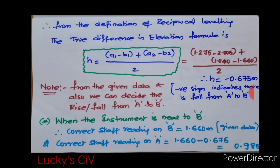In the next slide we have gone through the problem. From the definition of reciprocal leveling, the true difference in elevation formula is H equals to A1 minus B1 plus A2 minus B2 by 2.